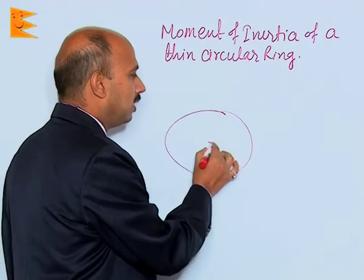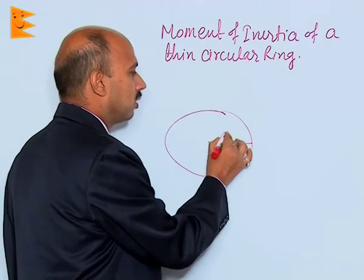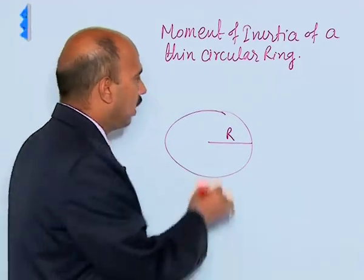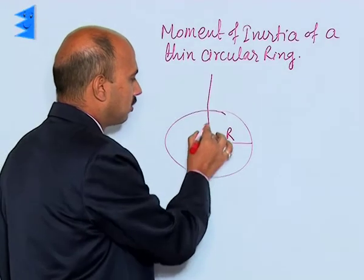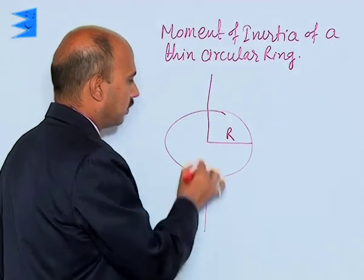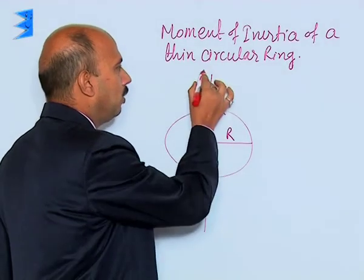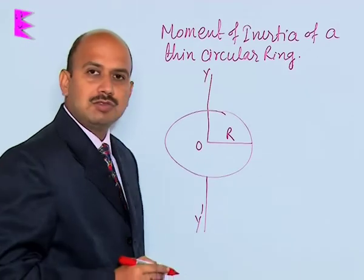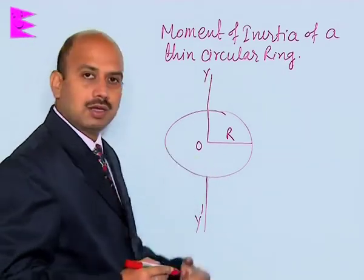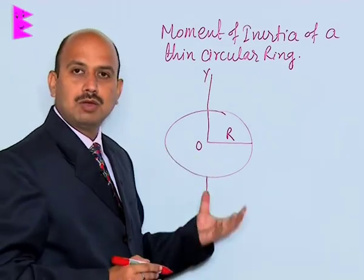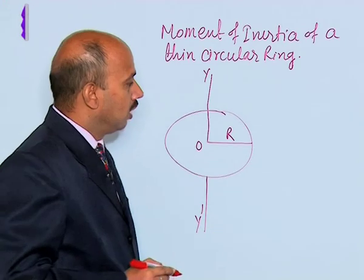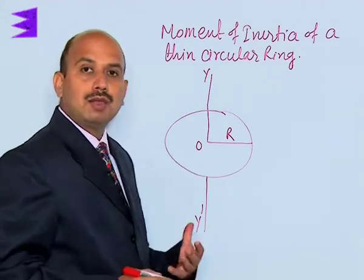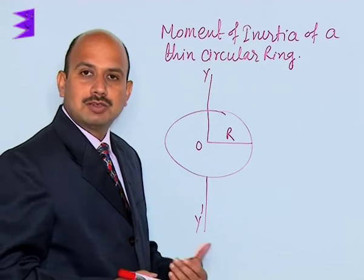Suppose this is a ring of radius r. Now you want to calculate its moment of inertia along this axis — here y-o-y dash — meaning this axis is passing through the center of the ring and perpendicular to the plane of the ring. In this case, how do we calculate the moment of inertia?